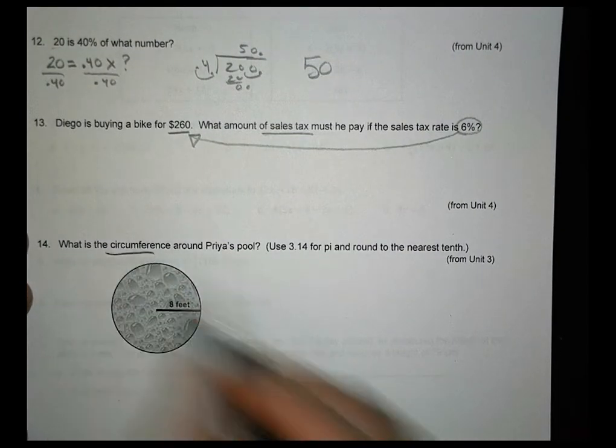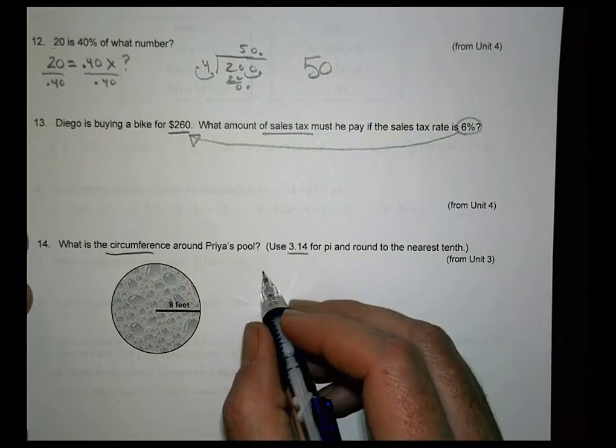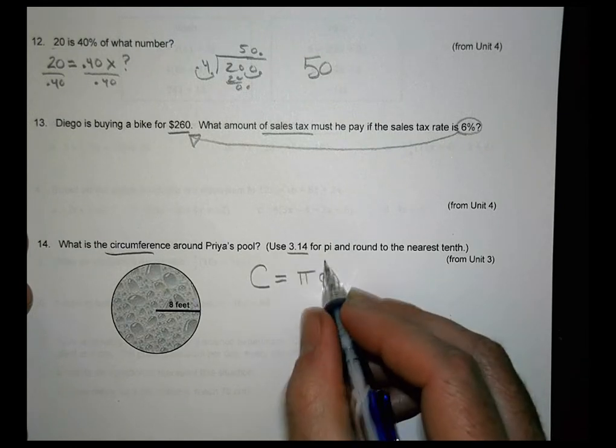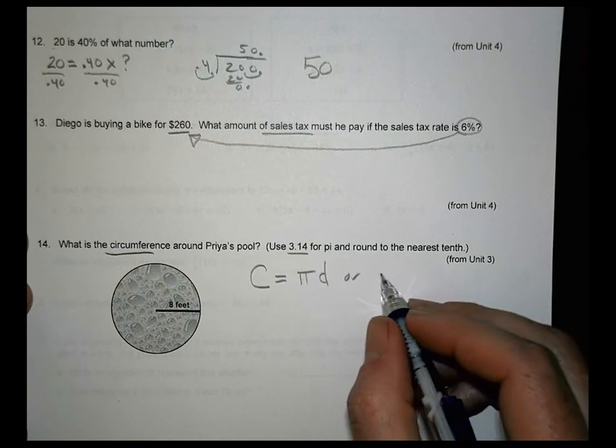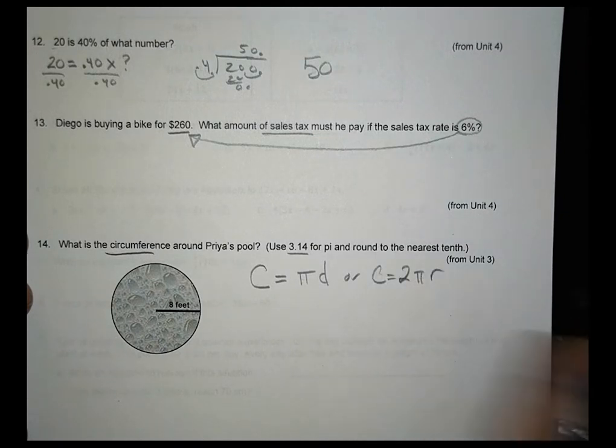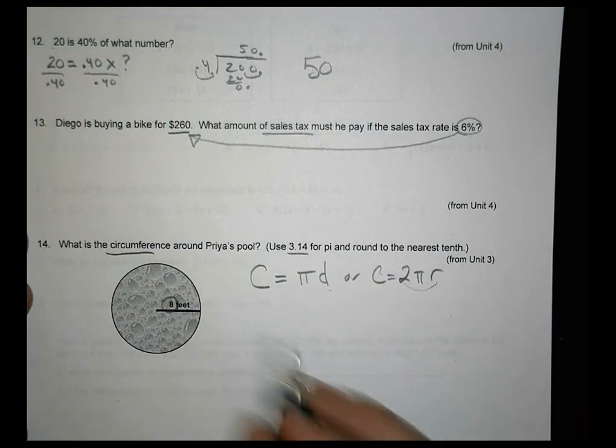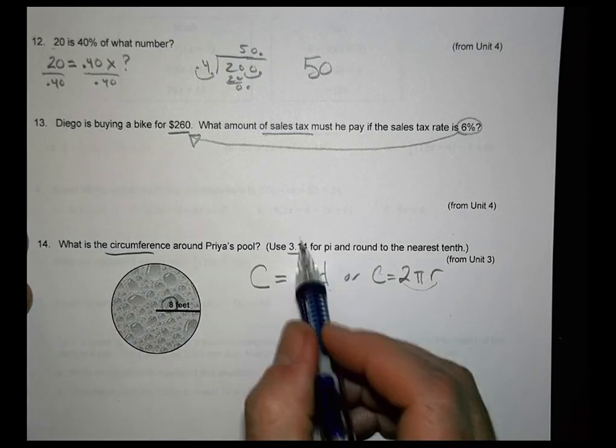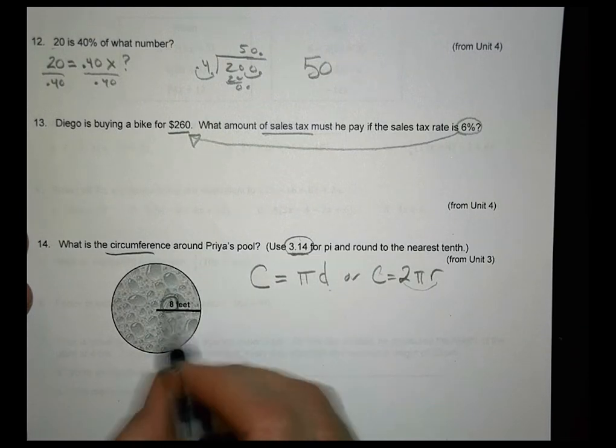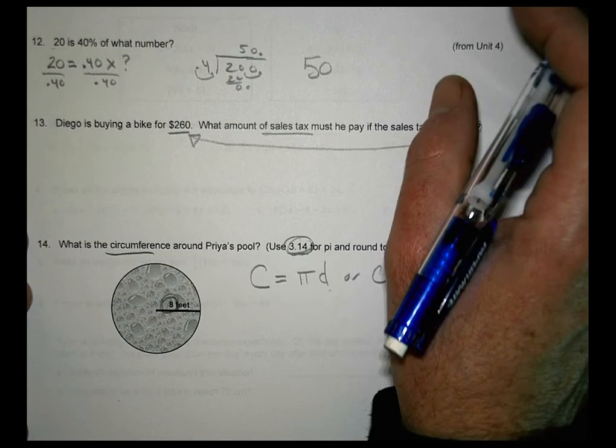What is the circumference around the pool? Use 3.14 for pi. All right. So what's the formula for circumference? Circumference equals pi times the diameter. Or you could think about circumference as equal to 2 times pi times the radius. 2 times radius is the diameter. They gave us a radius. So we're going to plug those values in. They also gave you the value for pi. So you can plug those values in too. All right. So everything you need is right here. And you can plug those in and see how you do. Have a great day. And we'll see you next time.